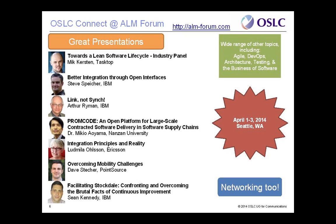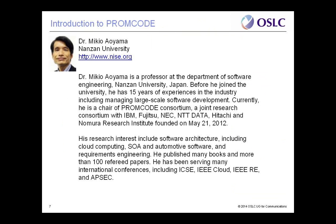Now on to the main show. Dr. Mikio Aoyama from Nanzan University has over 15 years of industry experience managing large-scale software projects before joining the Department of Software Engineering as a professor. He has been the chair of the PROMCODE Consortium — a joint research effort with IBM, Fujitsu, NEC, NTT Data, Hitachi, and Nomura Research Institute — which developed a specification for managing software supply chain for contracted delivery.